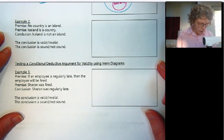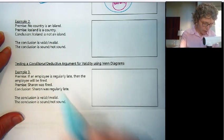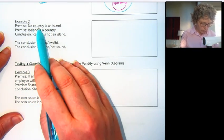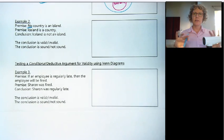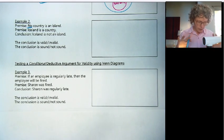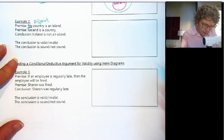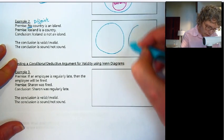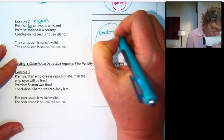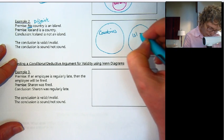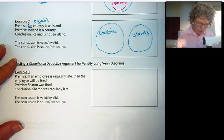Example two. The first premise is no country is an island. The word 'no' is a keyword for disjoint — those are disjoint sets. So I'm going to draw two separate disjoint circles: countries over here and islands over here, according to this premise.